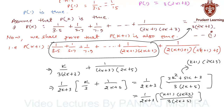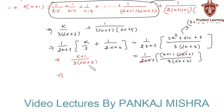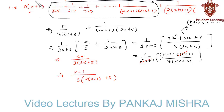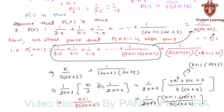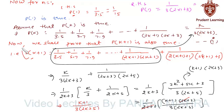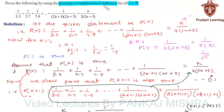We cancel (2k+3) from numerator and denominator, leaving (k+1) / [3(2k+5)], which can be written as (k+1) / [3(2(k+1)+3)]. Therefore this condition is true for n = k+1. Thus P(k+1) is true whenever P(k) is true, and by the principle of mathematical induction, P(n) is true for all natural numbers n.